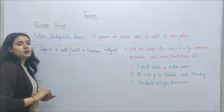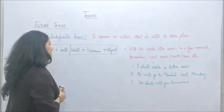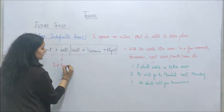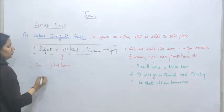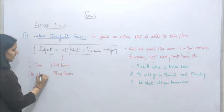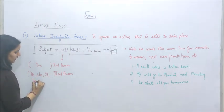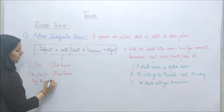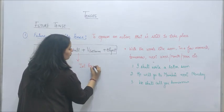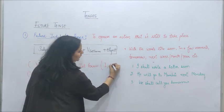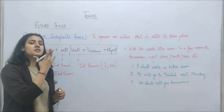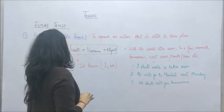If we talk about helping verbs: we use 'will' with second person and third person. Will is used in future indefinite tense with second person 'you' and with third person — he, she, it, they, or any name. If I talk about 'shall', it is used in future indefinite tense with only first person, that is with 'I' and 'we'. In terms of meaning, in future indefinite tense both 'will' and 'shall' have exactly the same meaning.